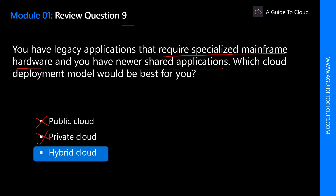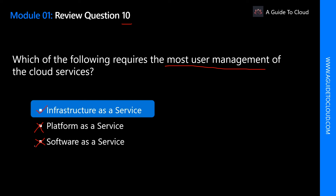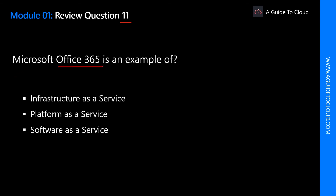Question 10: Which of the following requires the most user management of cloud services? The keyword is 'most user management.' Infrastructure as a service is absolutely correct because IaaS gives you more control and flexibility, but it comes at a price — you still have to maintain your operating system, update the platform, apply patches, etc. Platform as a service is not correct — in PaaS you only manage your data and application. Software as a service is also not correct. The answer is infrastructure as a service.